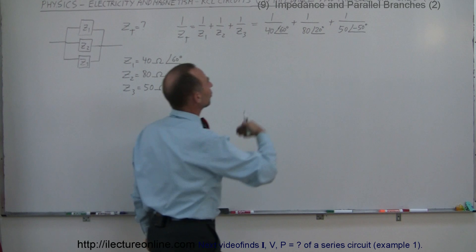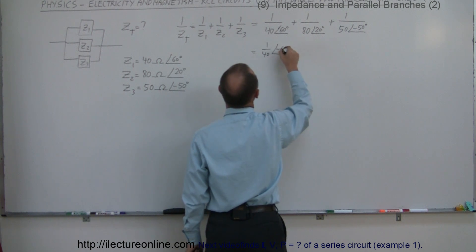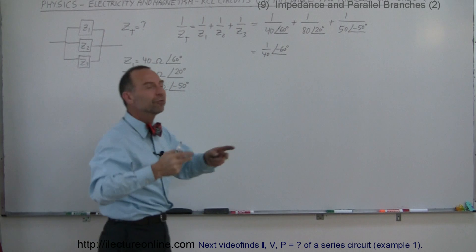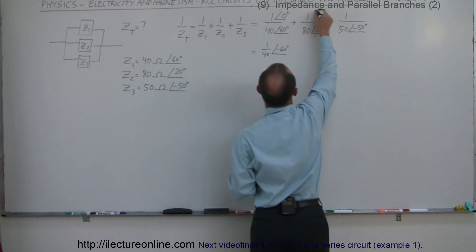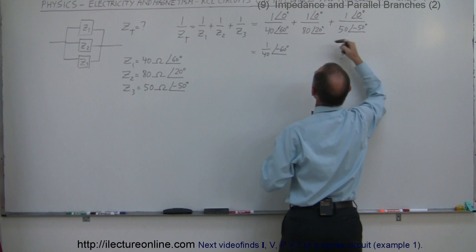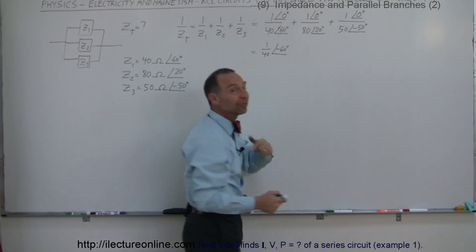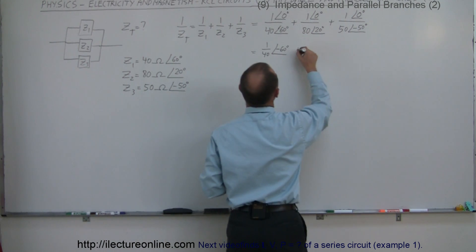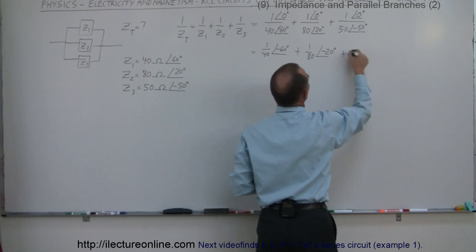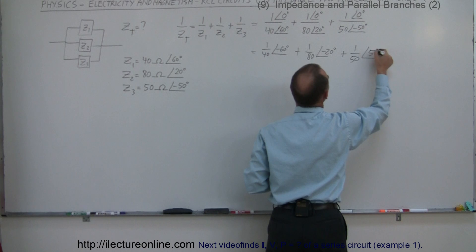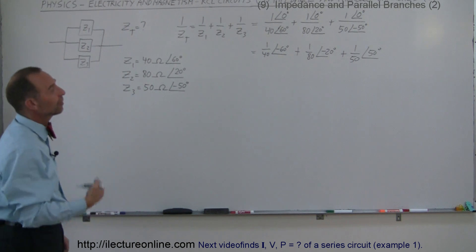The first thing we're going to do is move those to the numerator. One divided by 40 at 60 degrees becomes one-fortieth at minus 60 degrees. When we take the inverse, the angle becomes 0 minus 60 which is minus 60 degrees. Similarly, one over 80 at 20 degrees becomes one-eightieth at minus 20 degrees, and one over 50 at minus 50 degrees becomes one-fiftieth at plus 50 degrees, because 0 minus negative 50 becomes plus 50.